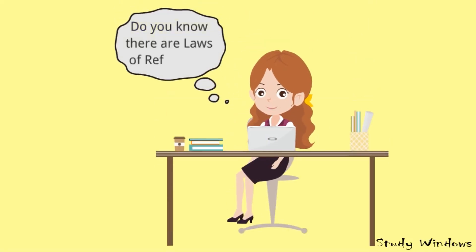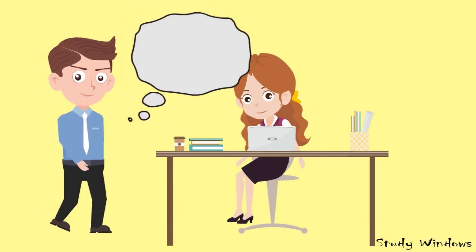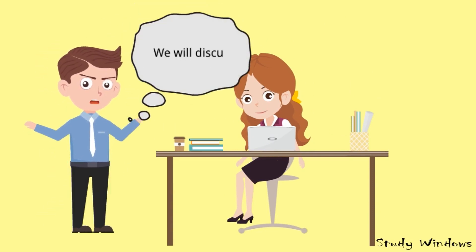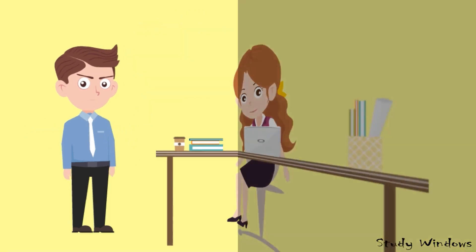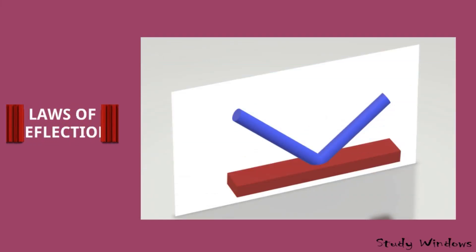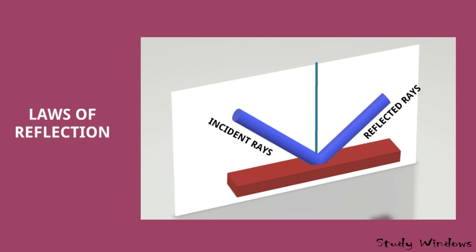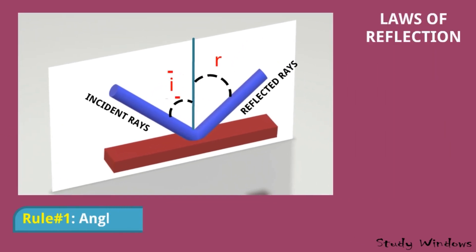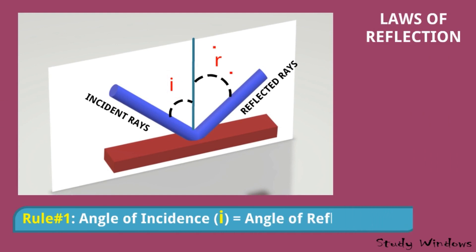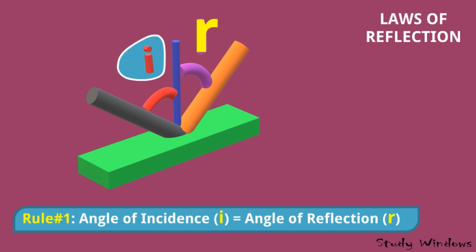There are laws of reflection. Here we have the incident ray, the reflected ray, and the normal — this is the angle of incidence and this is the angle of reflection. First law of reflection: the angle of incidence is equal to the angle of reflection, so i equals r. In a 3D view, this is the angle of incidence and this is the angle of reflection.